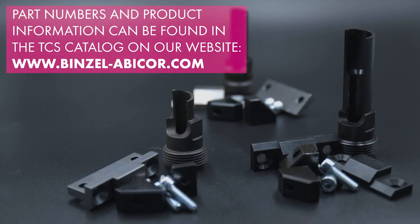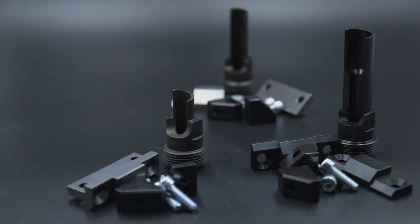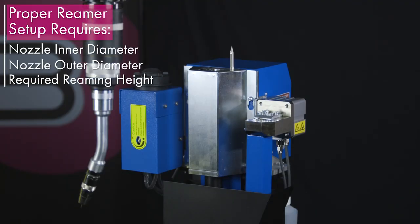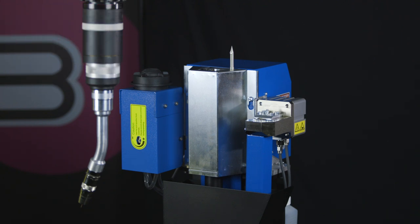With your reamer, it is important first to make sure that you are using the hardware needed to support your torch setup. Having the right clamp set and reamer bit for your application is critical. The three main pieces of information you need to know to ensure proper setup are your nozzle ID, your nozzle OD, and your required reaming height.